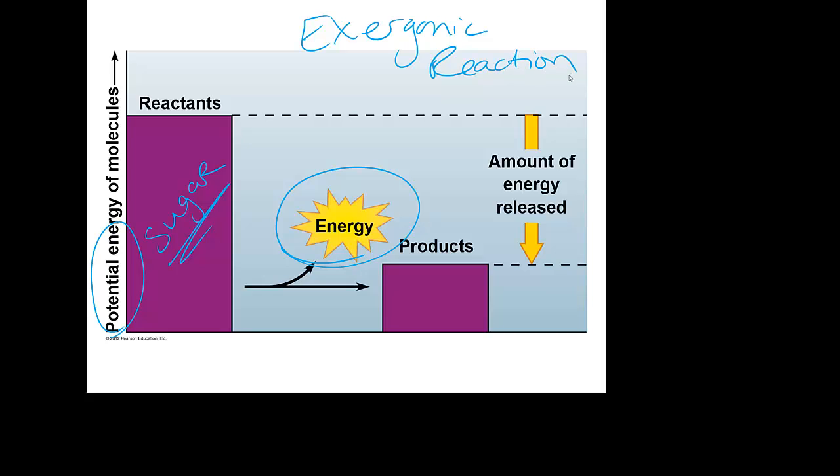Energy is released and the products that we form from sugar are CO2 and heat. So the amount of energy that is released, we're actually going to take this and help to build ATP.